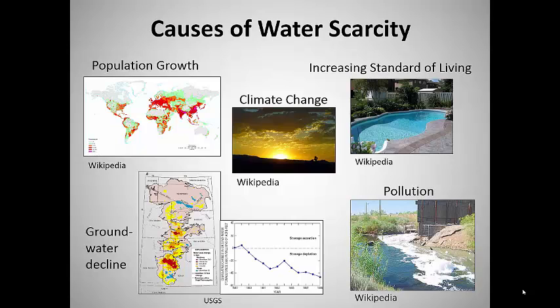Global climate change will bring more precipitation to some areas and less to others, but the increasing temperature we're expecting over the next several decades will cause greater water loss through evapotranspiration, so that the net effect over most of the globe will be decreased water availability. On top of that, we're likely to see intensification of extreme weather, meaning longer, deeper droughts.